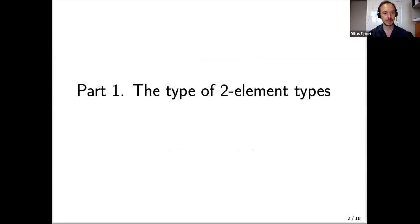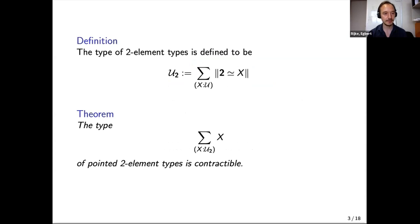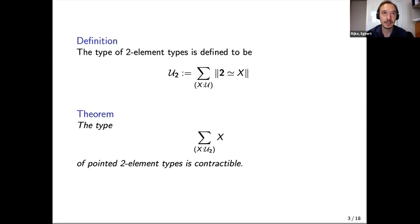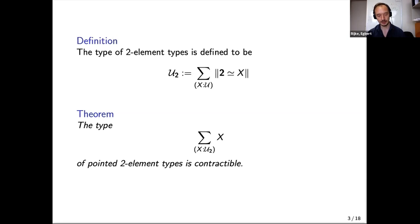It begins with a very simple observation about the type of two-element types. This is a very nice type, defined to be the type of all types that are merely equivalent to the Booleans. The basic theorem about them is that the type of pointed two-element types is contractible. If I have a two-element type and I know one point in it, then I know the other point.